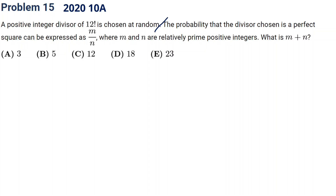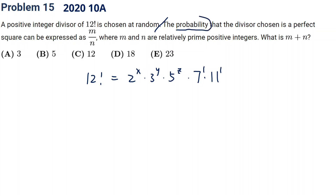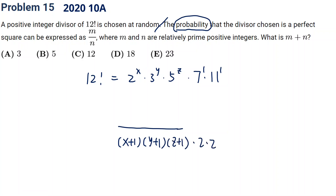First, write out the prime factorization of 12!: it includes 2^x × 3^y × 5^z × 7¹ × 11¹. The total number of divisors is (x+1)(y+1)(z+1)(2)(2). For the numerator, we count divisors that are perfect squares — those require all prime exponents to be even.